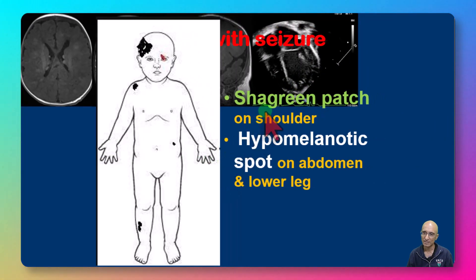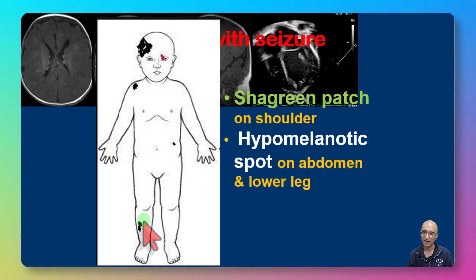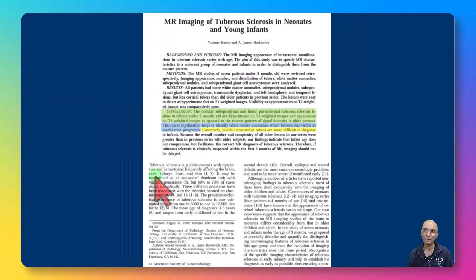On the clinical exam, they found a shagreen patch on the shoulder and hypomelanotic lesions on the abdomen and lower leg. The imaging appearances are consistent with tuberous sclerosis.